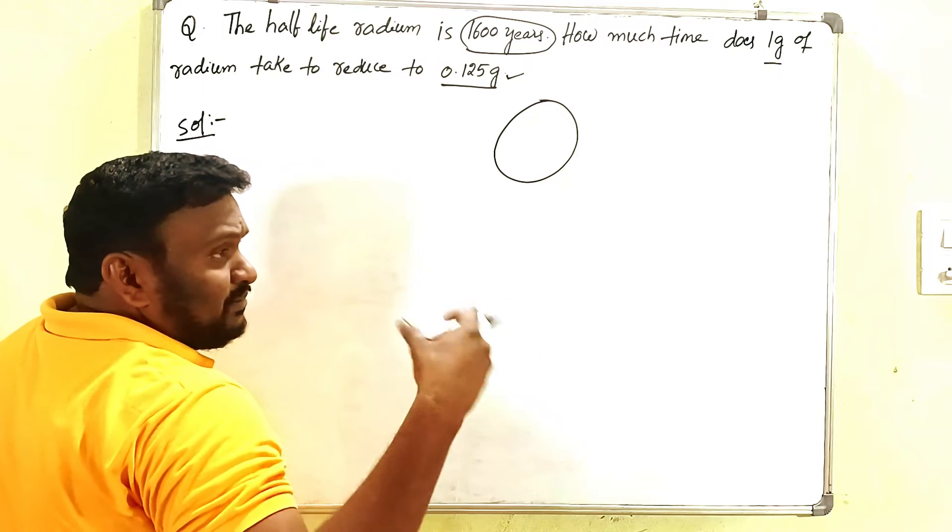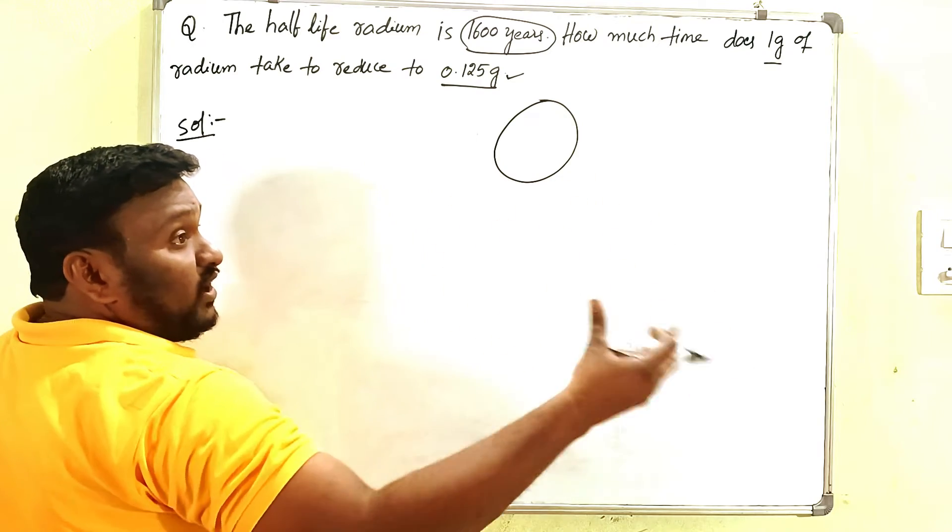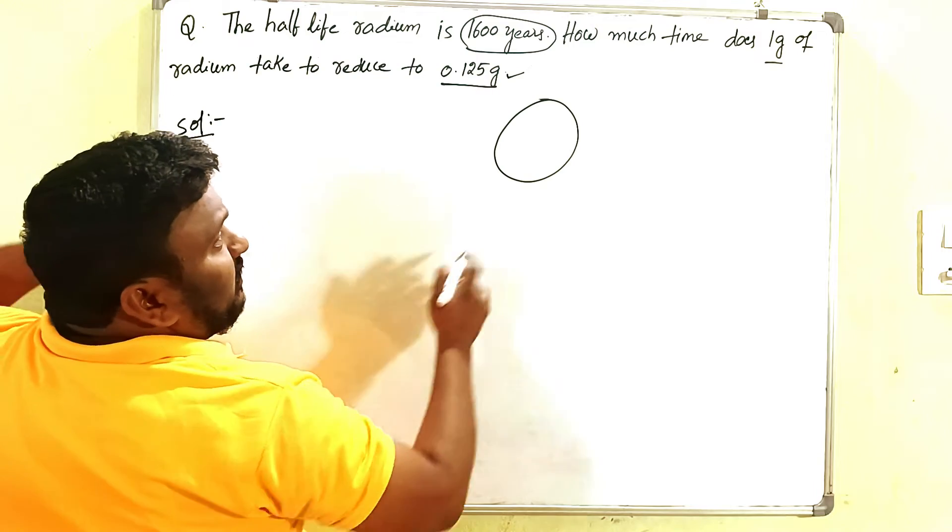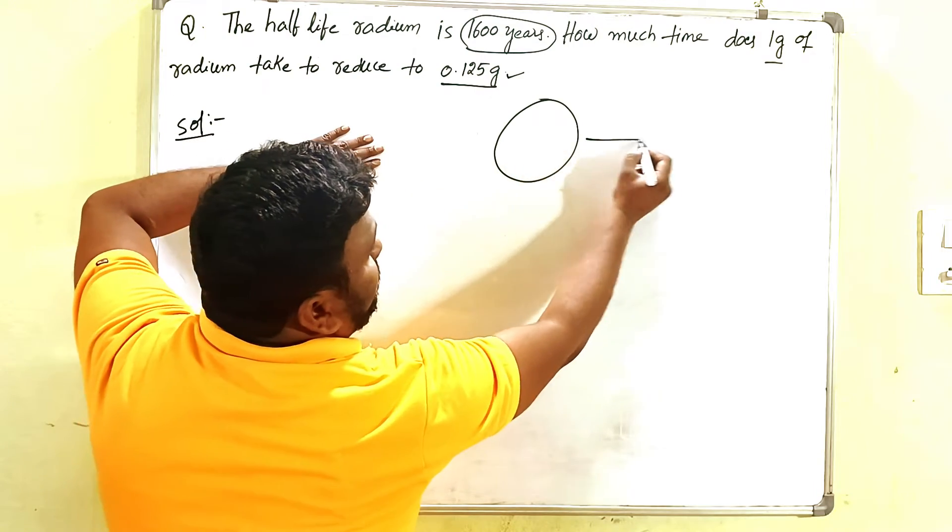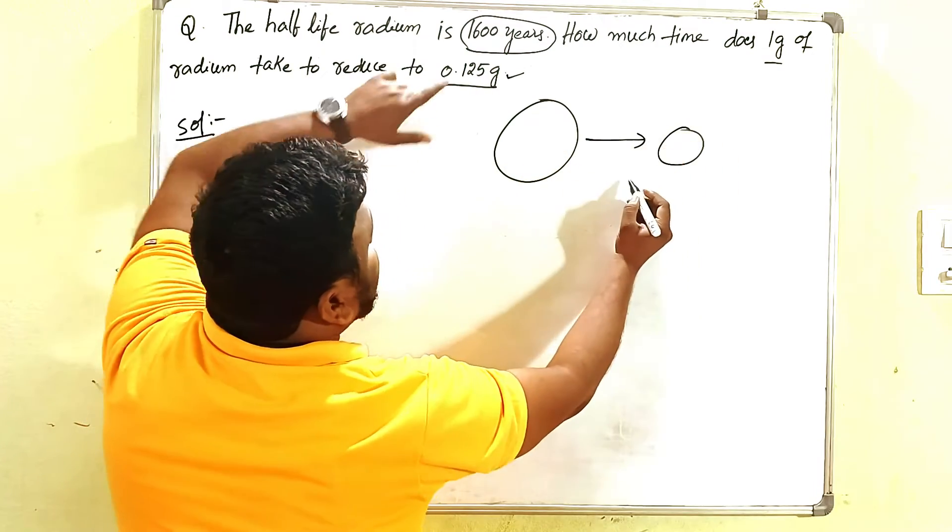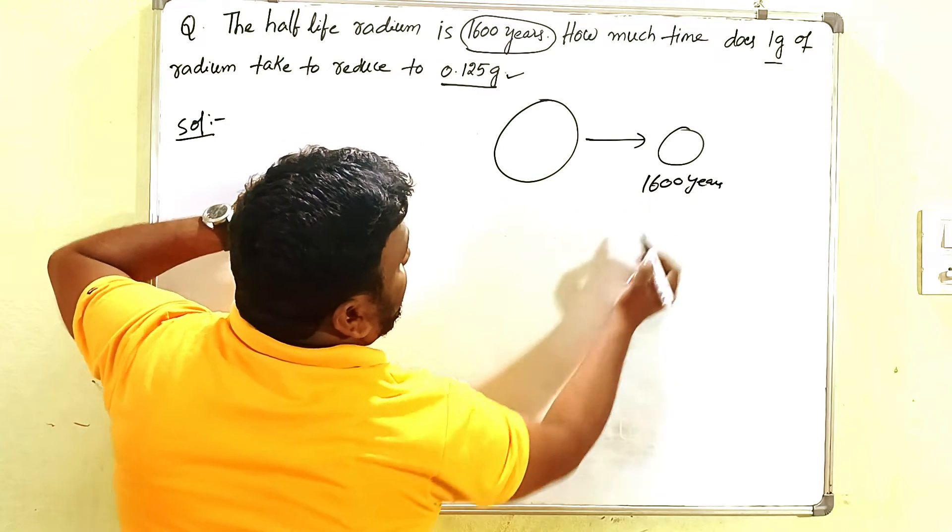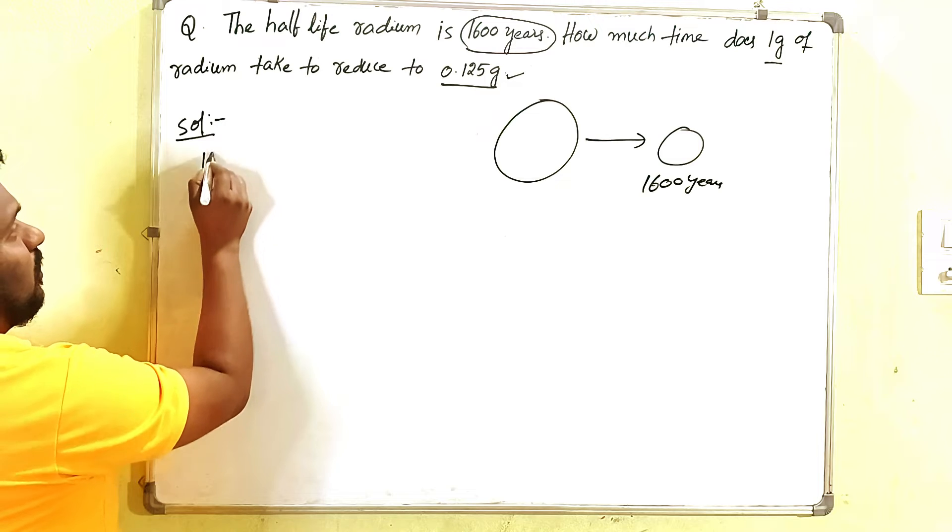So very simple formula. What is the problem here? One radium is there. So what is meant by half-life? The time taken to reduce to half of its size is what we call half-life. So here, to reduce to half, how much will it take? 1600 years.